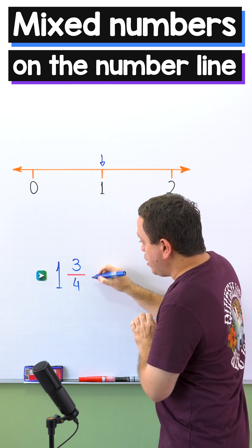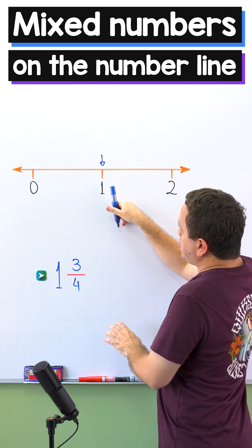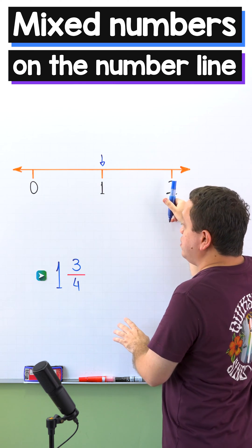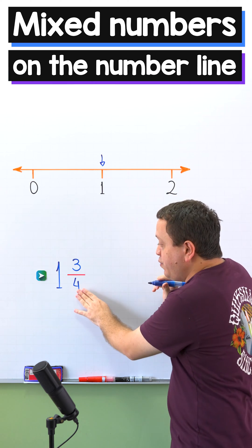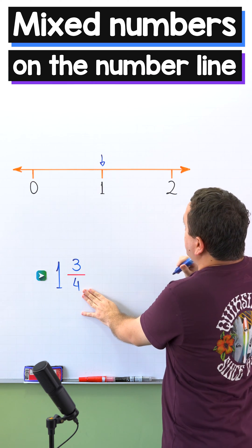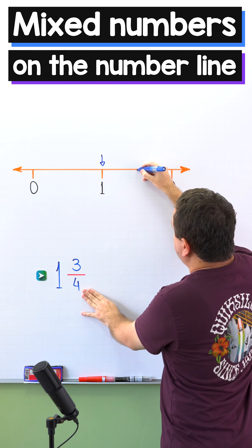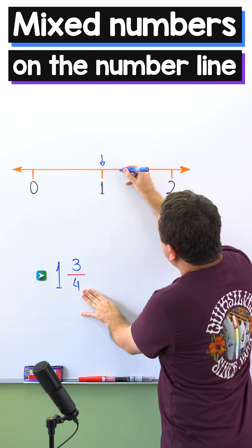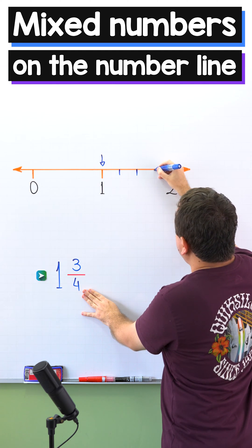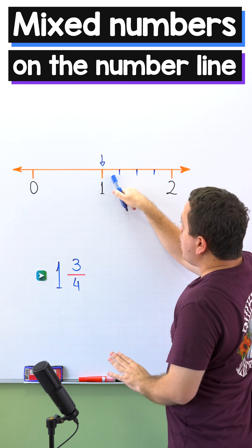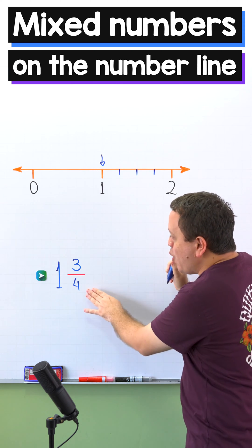Let's put an arrow over here. Now we need to add the fraction three-fourths, so we take the line segment between one and its successor two. Since the denominator is four, we divide this segment into four equal parts. So we put a tick mark over here, here another one in the middle, and the last one is over here. Now we have one, two, three, and four equal parts.